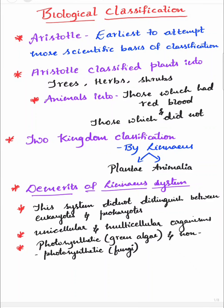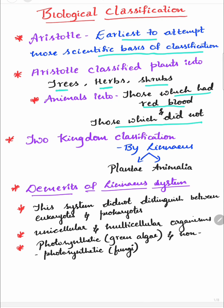Aristotle was the earliest to attempt a more scientific basis of classification. Aristotle classified plants into trees, herbs and shrubs, and animals into those which had red blood and those which did not.